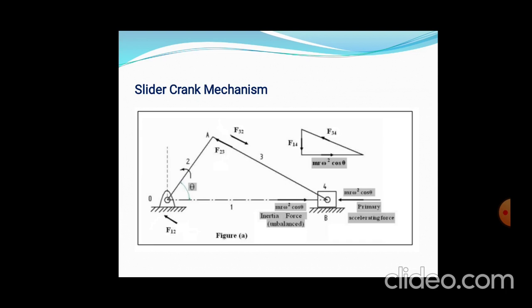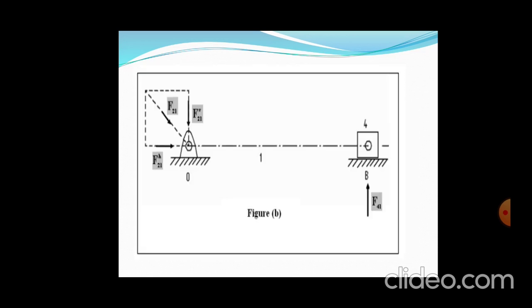So different forces are acting. F₁₂ is equal to M·R·ω²·cosθ. Then there are also F₁₄ and F₃₂. These are the forces acting on it — this is what is happening at the crank.